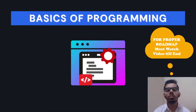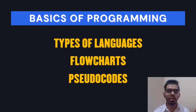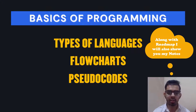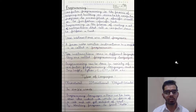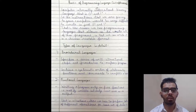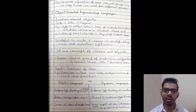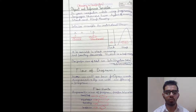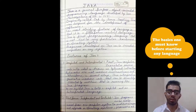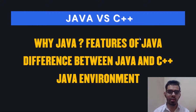Let's start with the roadmap. First of all, basics of programming — you should know what is programming and what are the things done in a program, like types of languages, flowcharts, pseudo codes, etc. In my notes I've explained what is programming, types of languages, procedural and functional languages, object-oriented programming languages, variables, flowcharts, and how to write pseudo code. These are the basics of programming you will learn first.